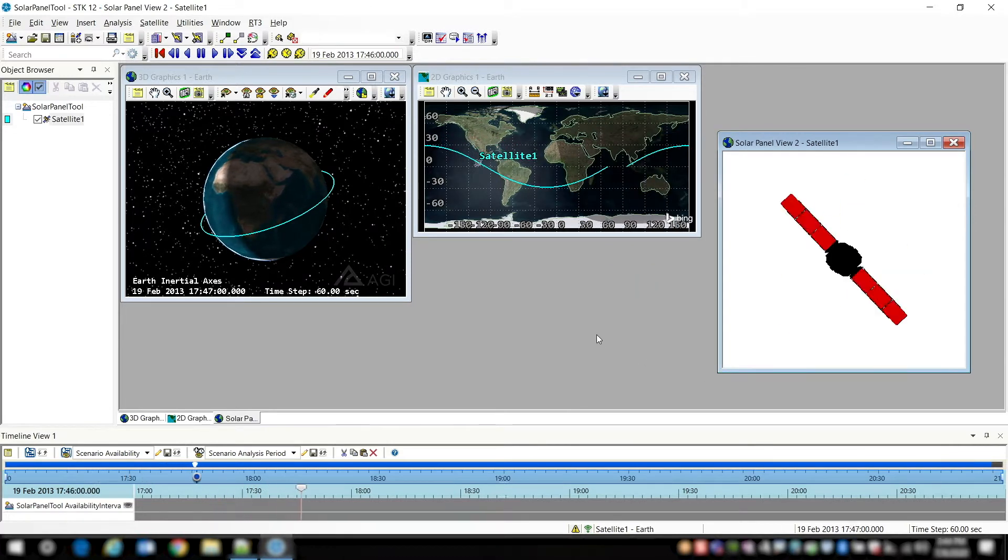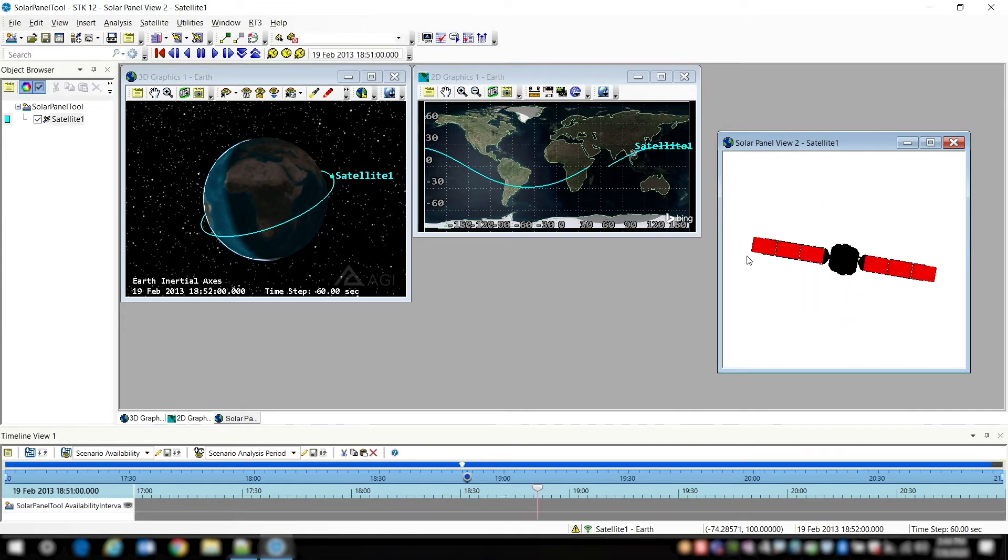And you see the satellite that we've inserted. You can see it's orbiting the earth and over time it's changing its attitude. It's changing its relative position of the sun.